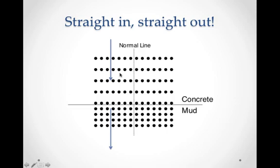This illustration is a model showing waves going fast here. When they change medium, they go slower. In this model, this is our marching band, and these are the rows of band members marching downward - a top-down view. This is concrete up here, and it's thick, sticky mud down below. Here is the transition between the concrete where you can march fast and the mud where you have to march slowly. This is called the normal line, which is perpendicular to that transition between the two media.